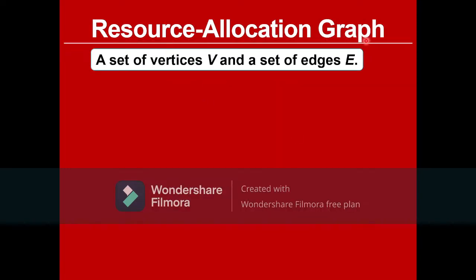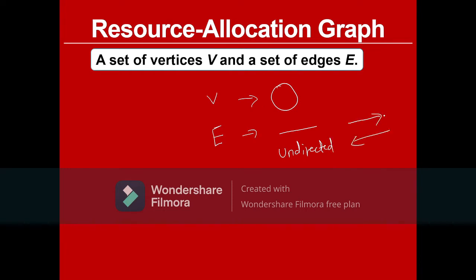So firstly, what is a resource allocation graph? As we all know, a graph is nothing but a set of vertices V and a set of edges E. Vertices are represented using circles and edges are represented with lines. There are two types of edges: directed edges and undirected edges. An undirected edge has no direction given, while a directed edge has a direction.